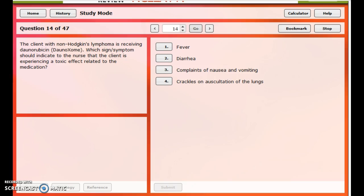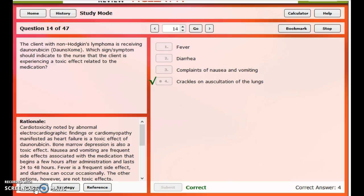This question is getting more into the things that are specific to anti-tumor antibiotics. Again, we have one of the rubicins, daunarubicin. Which signs or symptoms should indicate to the nurse that the client is experiencing a toxic effect related to the medication? Fever, we might get that with others. Diarrhea, all of them. Nausea, vomiting, all of them. Here we go. Crackles on auscultation of the lungs. Remember how I told you that these rubicins, especially the red devil drugs, are specifically hard on the heart and lungs. Here it lists cardiotoxicity. And again, the lungs, it's hard on those too.